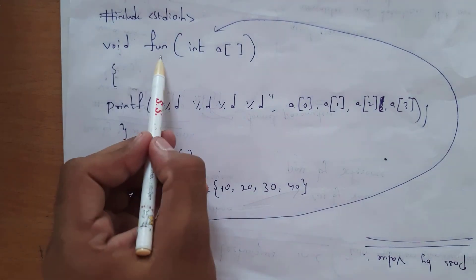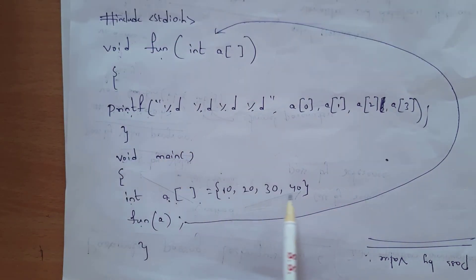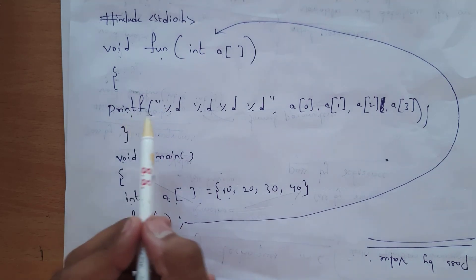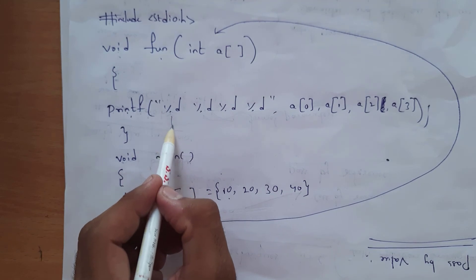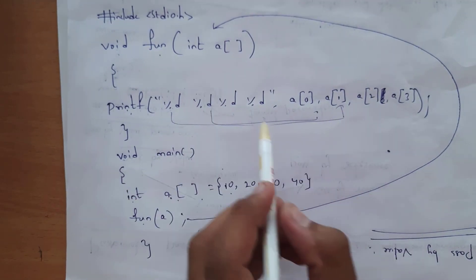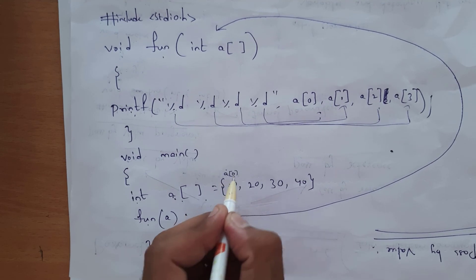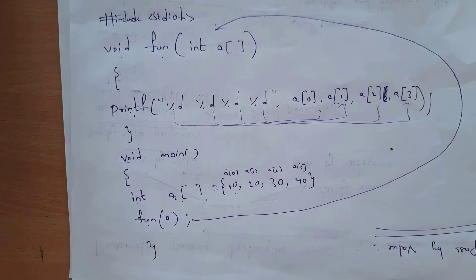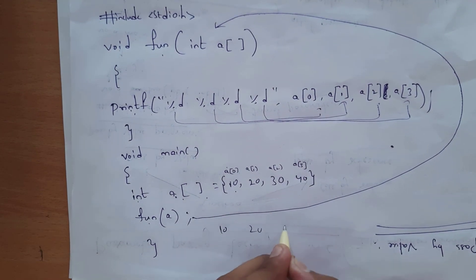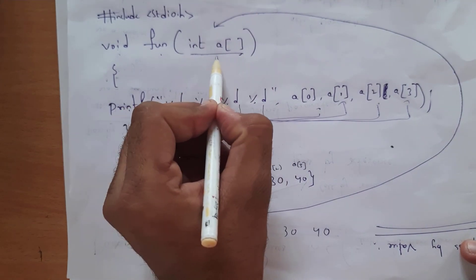I define void fun(int a[]) separately. Inside this function, I write printf with %d %d %d %d and pass a[0], a[1], a[2], a[3]. This prints the values at index 0, 1, 2, and 3. So the output will be 10 20 30 40. This is an example of passing an array as an argument to a function.